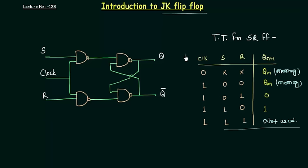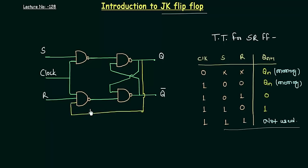Now it is clear why we have to study the JK flip flop. Let's move to the circuit. We start with the SR flip flop circuit and make a JK flip flop from it. There are two outputs: Q and Q complement. We take Q and give it as one of the inputs to the NAND gate where R is an input. Similarly, we take Q complement and give it to the NAND gate where S is an input. This gives us our JK flip flop, with S renamed as J and R renamed as K.